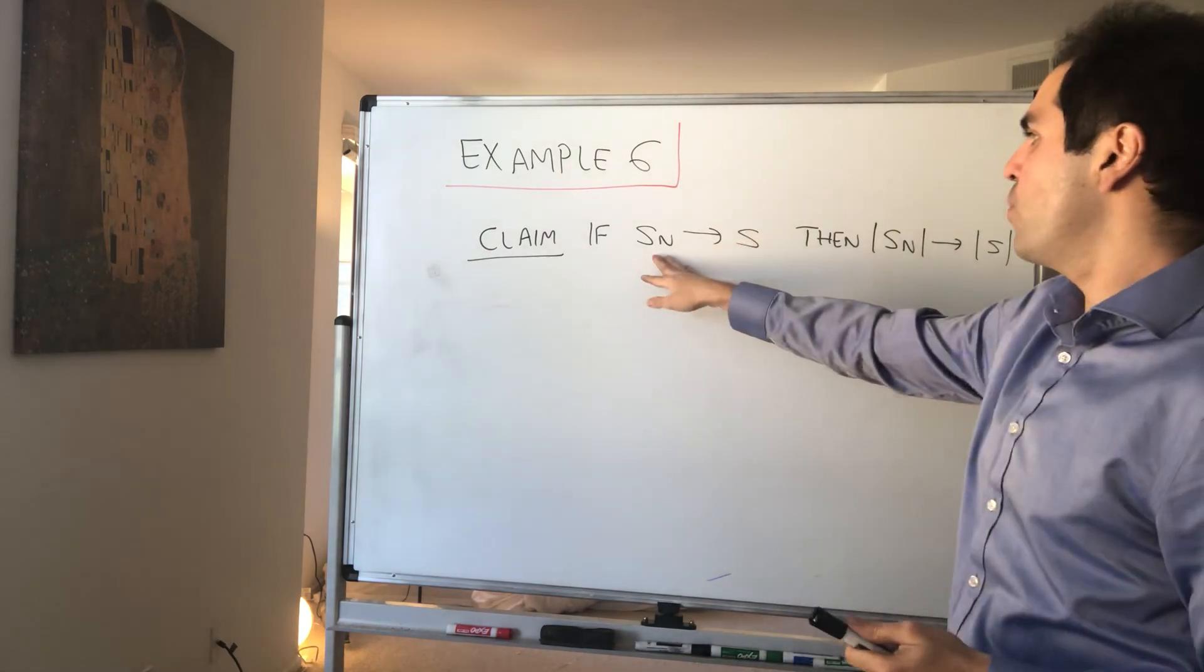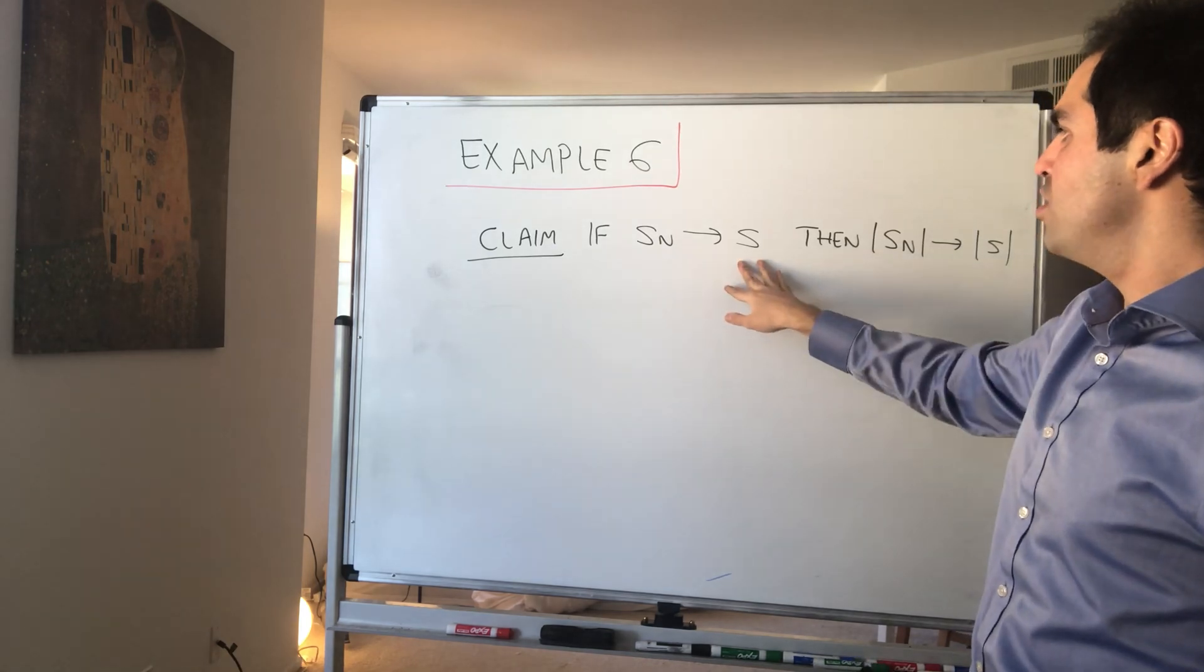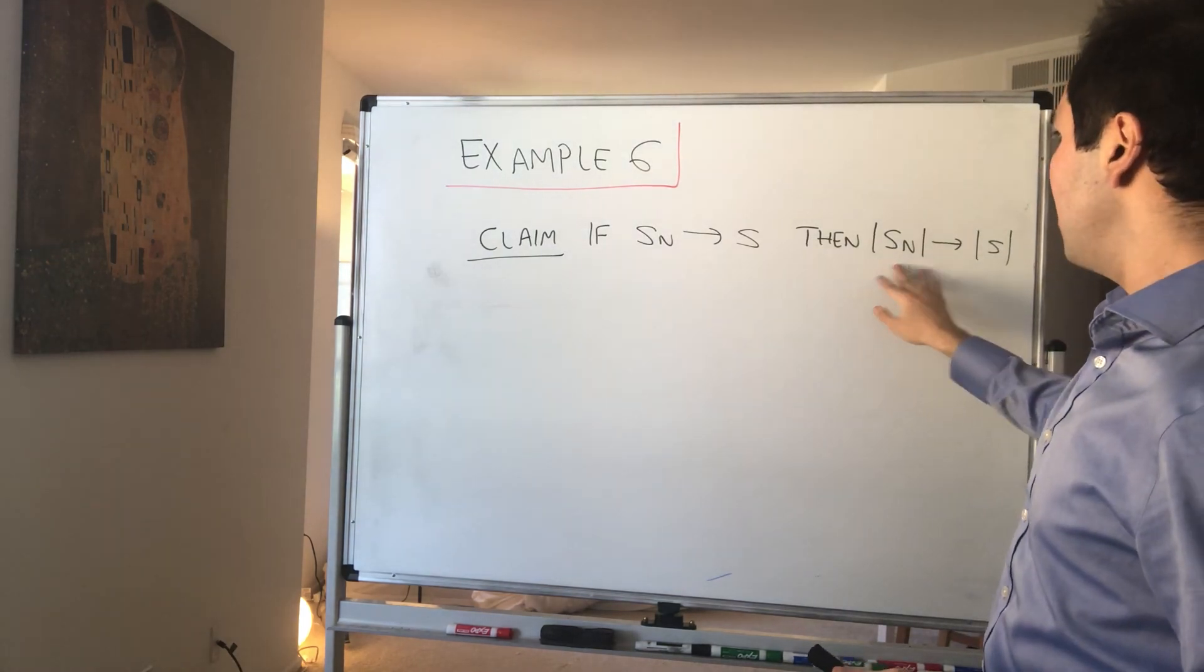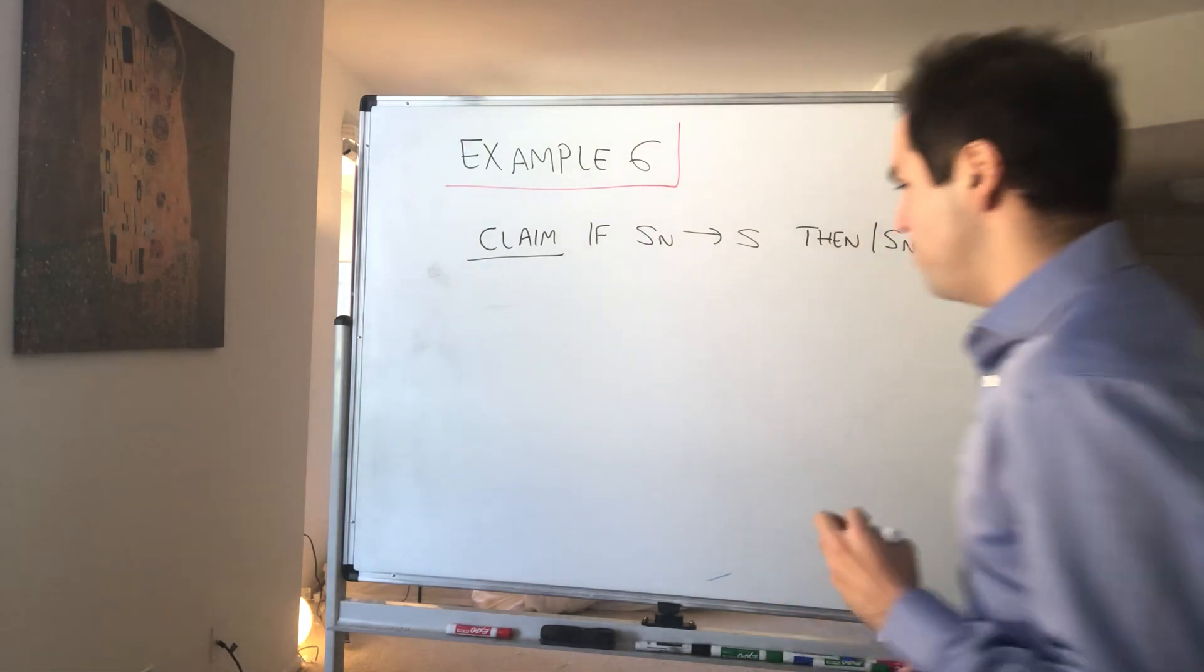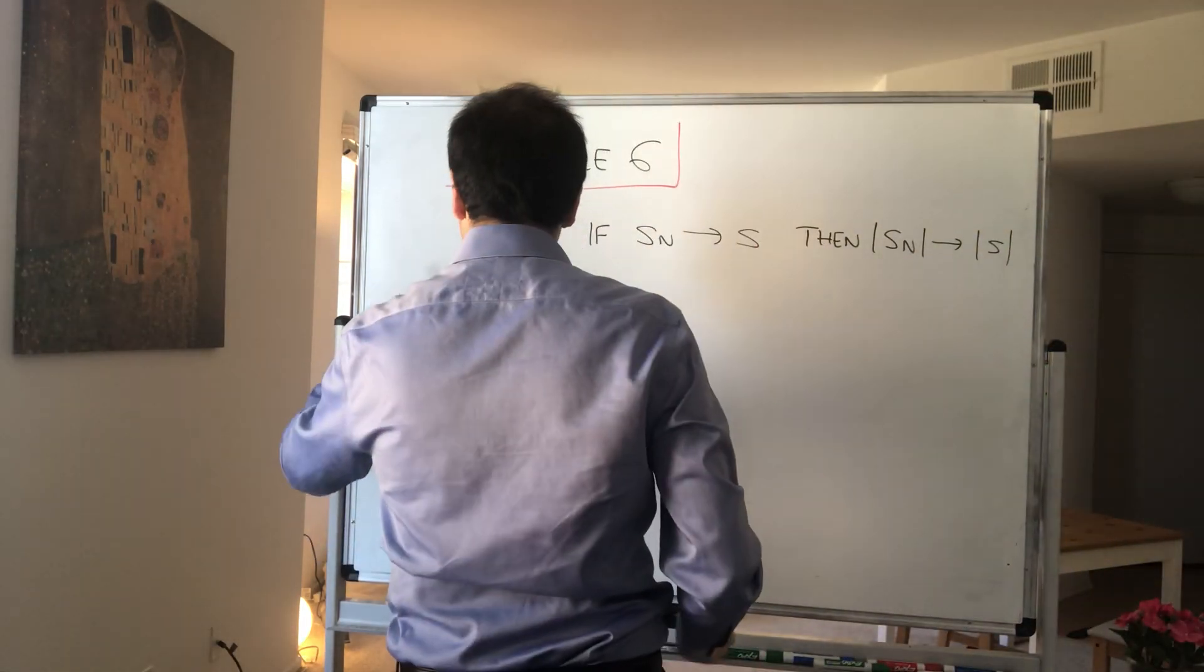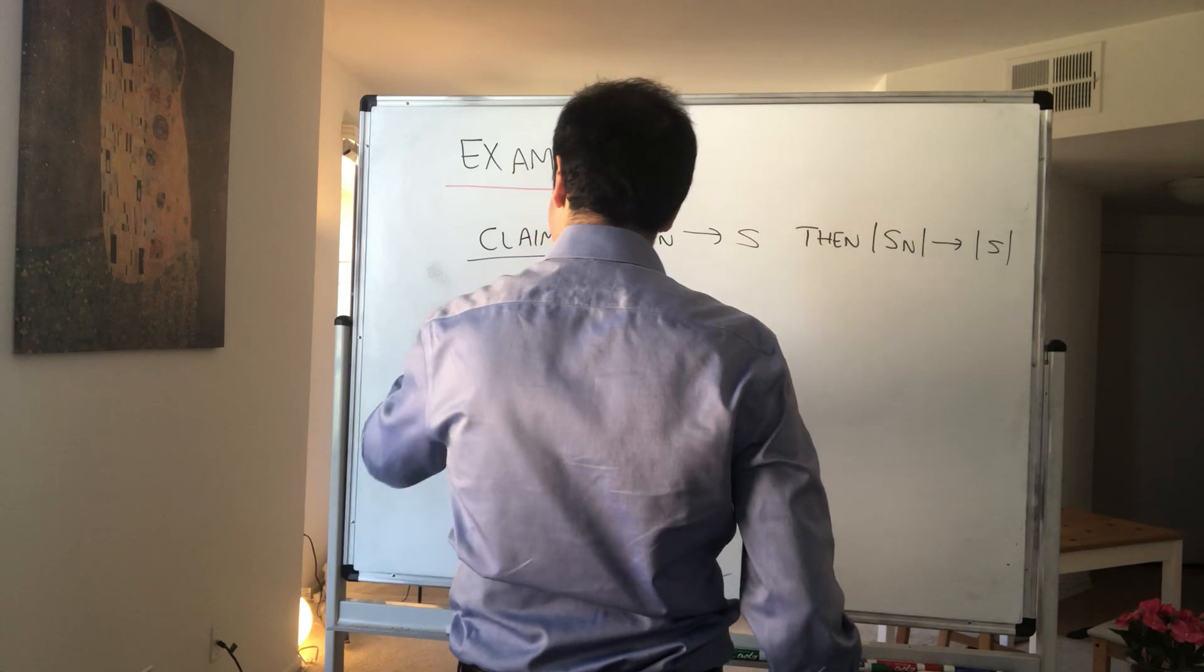Today what we want to show is that if the sequence s_n converges to s, then the absolute value of the sequence converges to absolute value of s. Let me just do it directly so you can see how elegant this is.